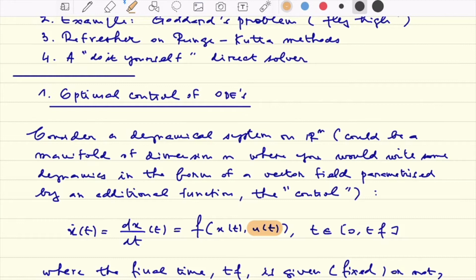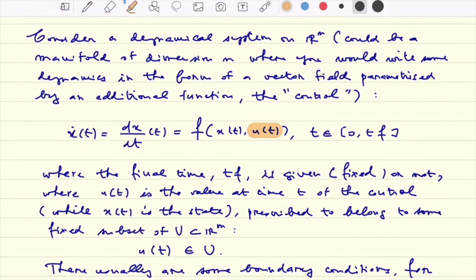We have some final term T_F which can be fixed or not. And we can also have some constraint on the control, meaning that U is prescribed to live within some capital set U, a subset of R^M. So N is the dimension of the state X while M is the dimension of the control U.